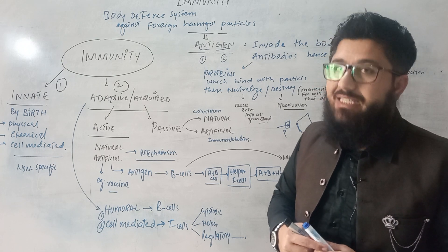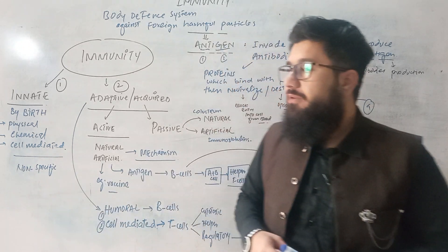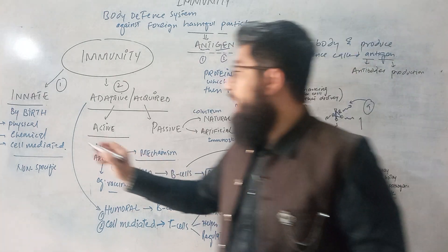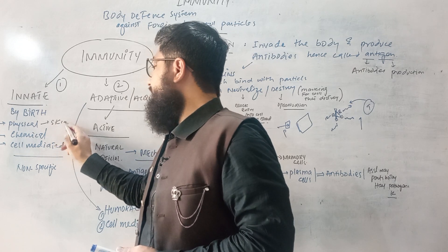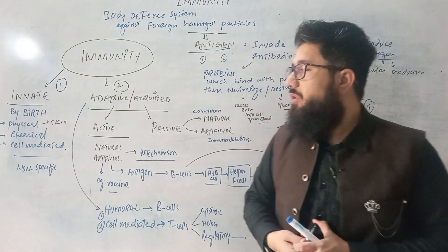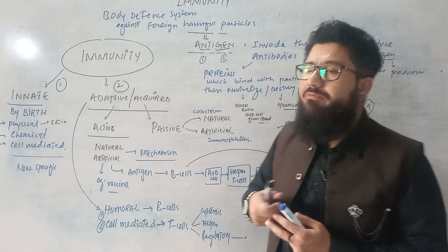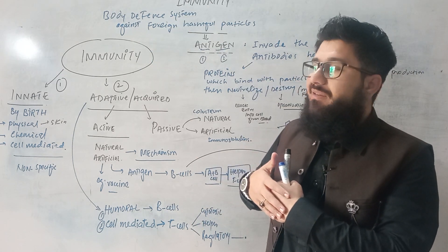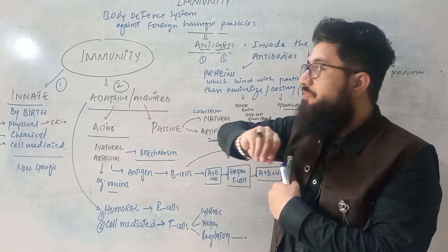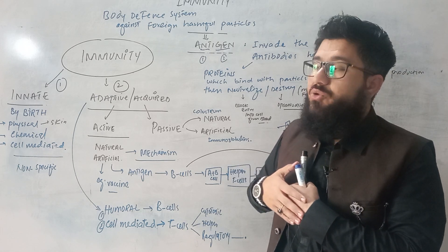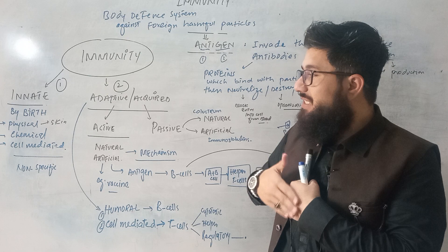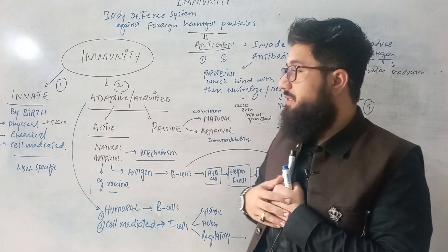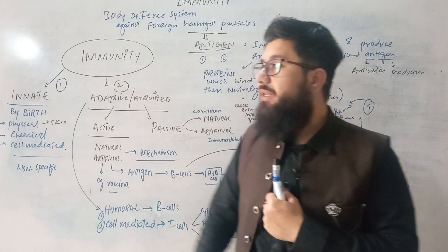Innate immunity has three levels. The first is physical immunity. Our skin is an example — it physically protects us from harmful particles. Skin provides a barrier against dirty, filthy, and harmful particles, not allowing them to enter the body. So skin is resisting the entry of harmful particles — this is physical immunity.